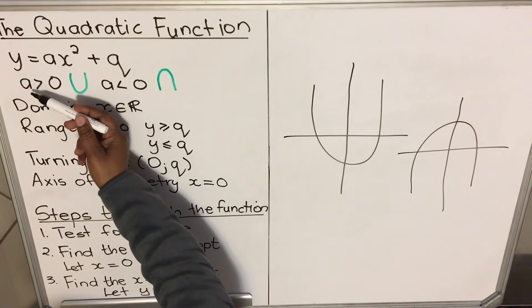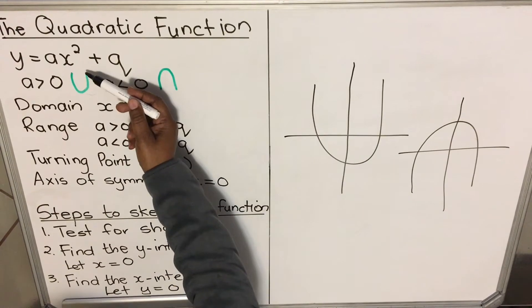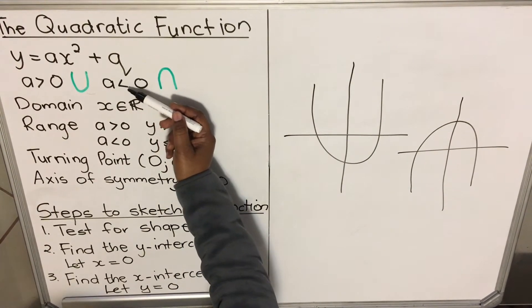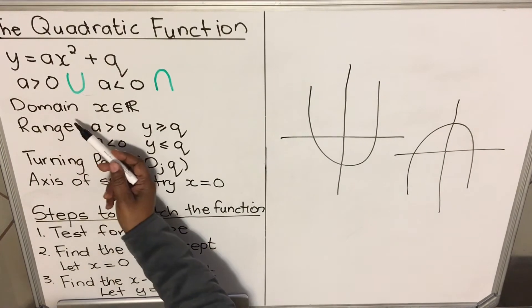If a is greater than zero, meaning a is positive, it will face up. If a is less than zero, meaning that your a is negative, it will face down. And the domain of this function is x is an element of real numbers.